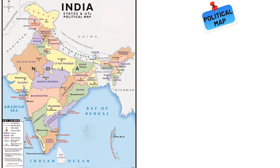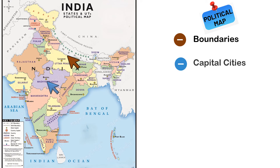Let's focus on some examples of political map elements. First element: boundaries — political maps clearly represent boundaries between countries, states, and other political entities, typically marked with clear lines. Second element: capital cities — they display capital cities, which are often marked with special symbols like stars or circles to distinguish them from other cities.